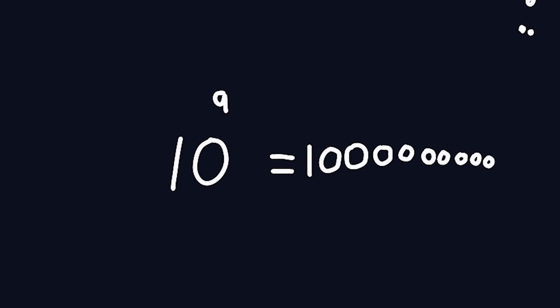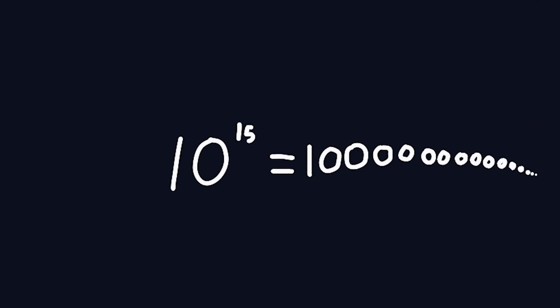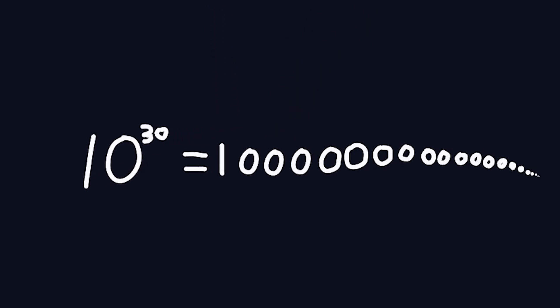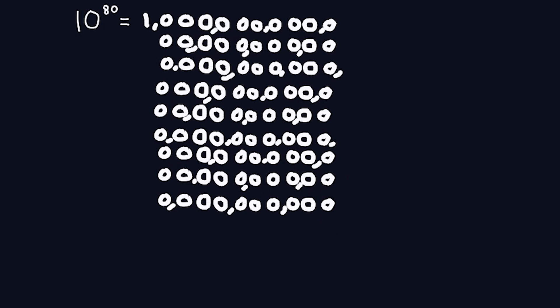10 to the power of nine is 1 billion. 10 to the power of 12 is 1 trillion. 10 to the power of 15 is a quadrillion. 10 to the power of 18 is a quintillion. 10 to the power of 30 is called a nonillion. 10 to the power of 80 is roughly the amount of particles in the observable universe, but maths doesn't care. Let's go larger. 10 to the power of 100, which is the same as 1 followed by 100 zeros, is a googol.